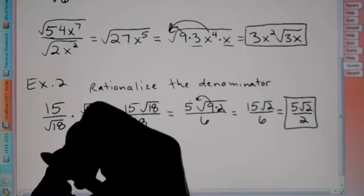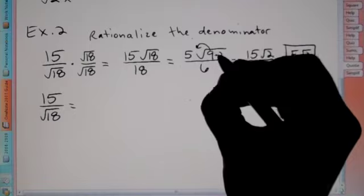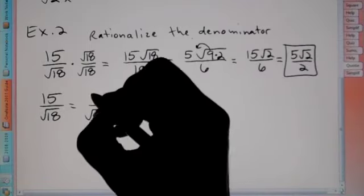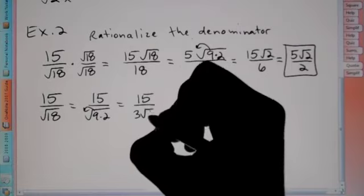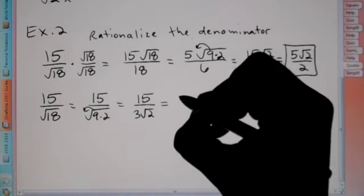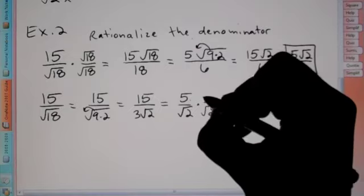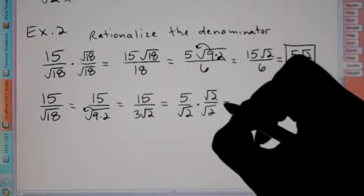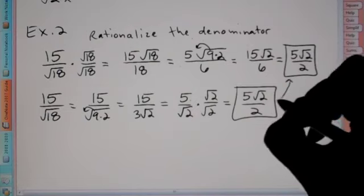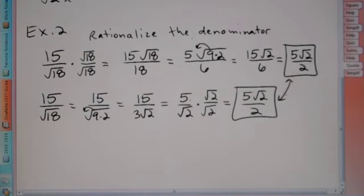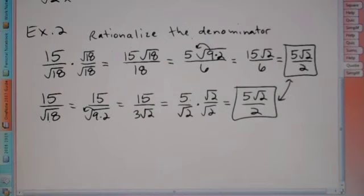Another way is to first break down the 18. We said 18 is 9 times 2. Taking the square root of 9 gives 3, so we have 15 over 3 root 2. Then 15 divided by 3 is 5 over root 2. Now we multiply by root 2 top and bottom. So we get 5 root 2 on top, and root 2 times root 2 is 2 on the bottom — the same answer. Personally, I prefer simplifying the root first.